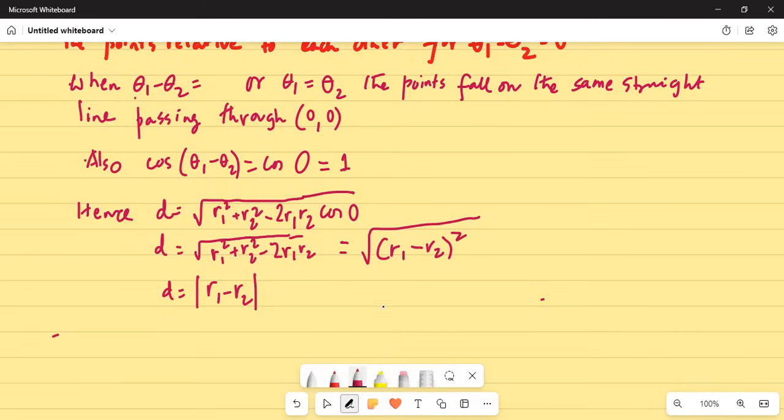So that is the distance between the two points when theta1 minus theta2 equals zero or theta1 equals theta2, and both the points fall on the same line.